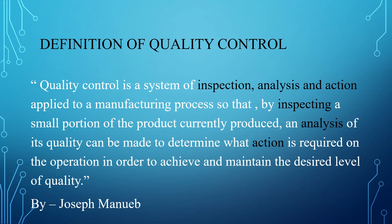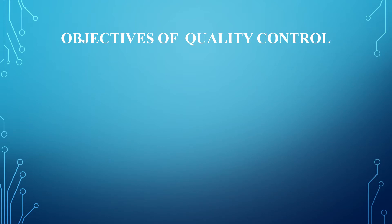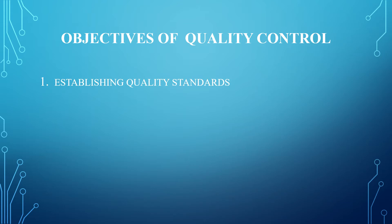Now let us see what are the objectives — the main purpose of quality control. The first objective is establishing quality standards. The main object of a quality control system is to establish desired quality standards that are acceptable to customers. One important consideration is that the standards set should be economical, because sometimes a manufacturer wanting the highest standards may end up spending more money, increasing the cost of the product. Standards must be economical for both the company and the consumers.